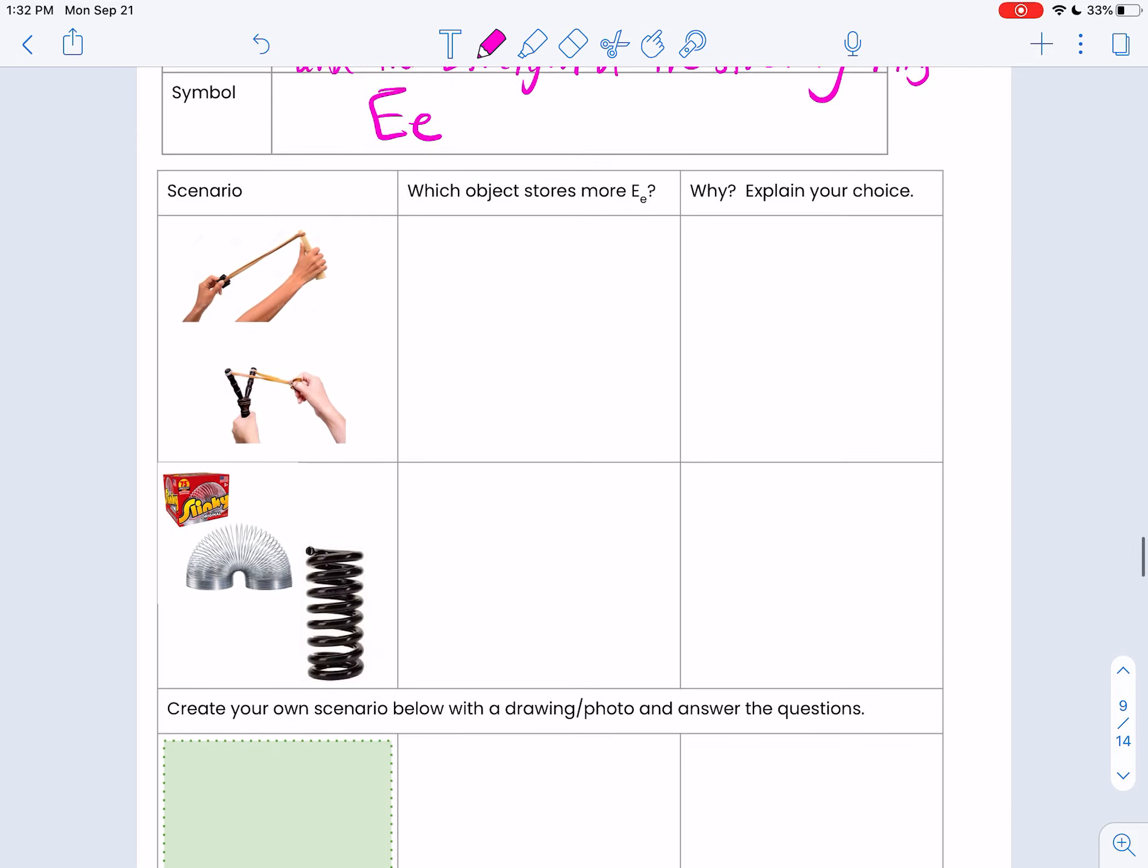And when we look at these pictures, which object stores more EE? Assuming this is the same slingshot, this one is stretched very far, this one is not stretched very far.